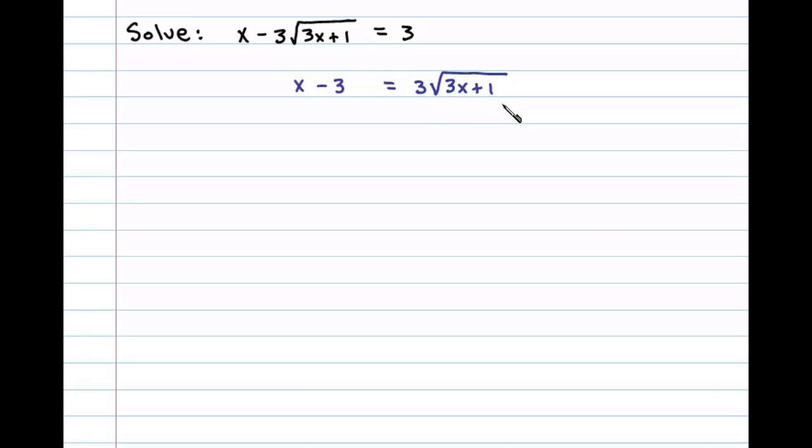Now once we get the term with the radical isolated, we then in this case square both sides. Remember, squaring both sides introduces the possibility for extraneous solutions, so we better check our answer in the end. x minus 3 squared is x squared minus 6x plus 9. Squaring this term here involving the radical, 3 squared is 9 times 3x plus 1.